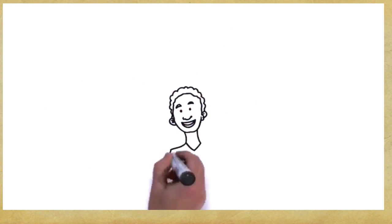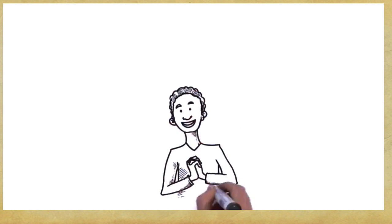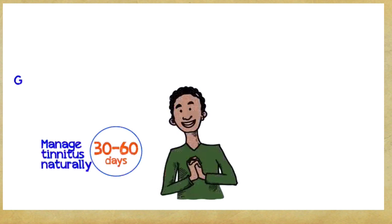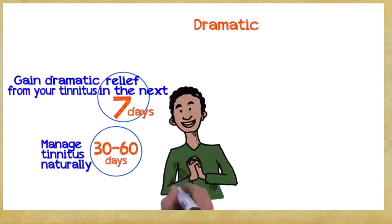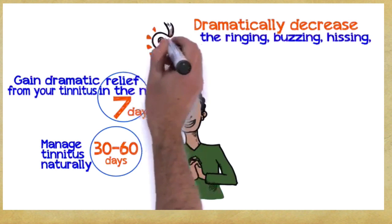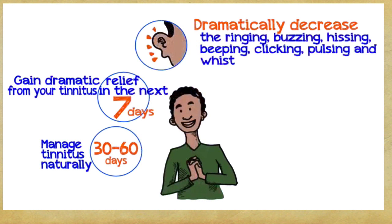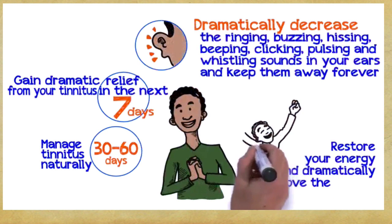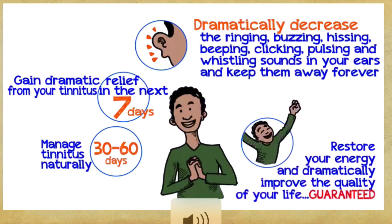So, what can you gain if you embrace these three easy principles? Well, you can manage tinnitus naturally within 30 to 60 days. Gain dramatic relief from your tinnitus within the next seven days. Dramatically decrease the ringing, buzzing, hissing, beeping, clicking, pulsing, and whistling sounds in your ears and keep them away forever. Restore your energy and dramatically improve the quality of your life, guaranteed.